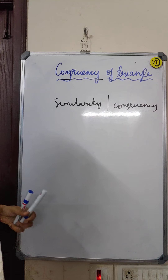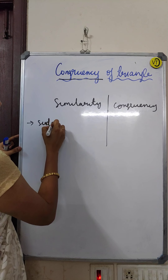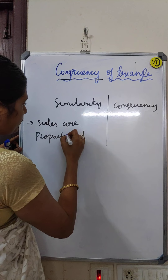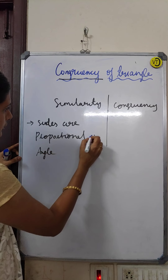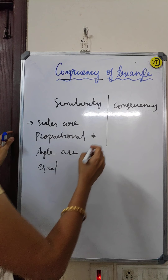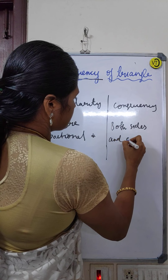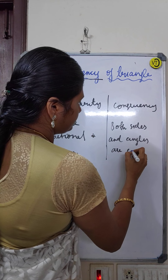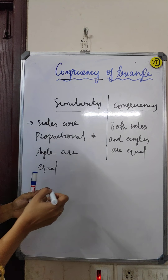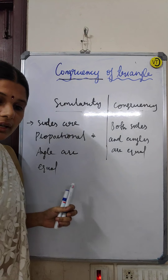Let me repeat: in similarity, sides are proportional and angles are equal. But in congruence, both sides and angles are equal. This is the difference between similarity and congruency. Today's topic is congruency of triangles — what are the congruency conditions we have in triangles?